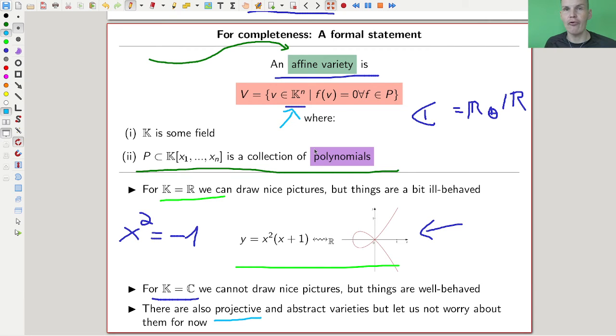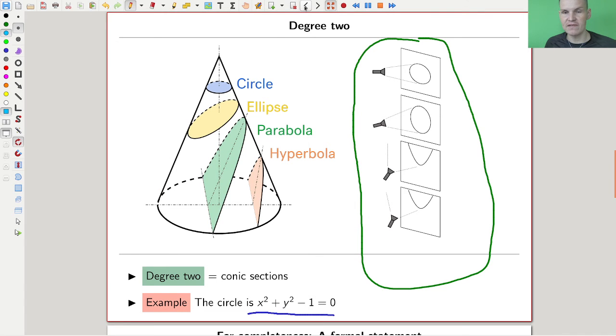You might want to take the projective ones for classical algebraic geometry as well. Instead of taking values in affine space, the field to the n like R^n, they would take values in projective space. That's essentially what they are, and then usually things get a little bit nicer.